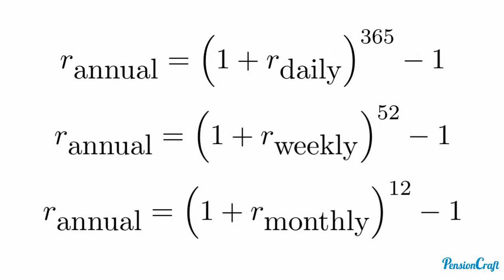To convert weekly and monthly rates, the process is almost exactly the same. But instead of raising to the power of 365, to annualize a weekly return we'd raise it to the power of 52, which is the number of weeks in a year. To convert a monthly rate we'd raise to the power of 12, because there are 12 months in a year.